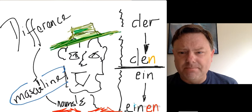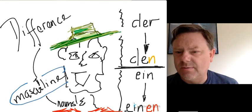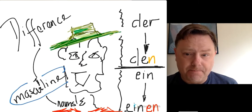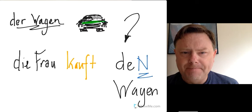All right. However, masculine nouns, there is a difference. Der changed to den in the accusative case. Ein changed to einen. Neuter, they do not change between nominative and accusative.